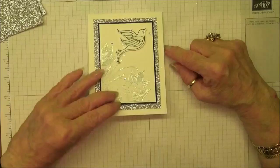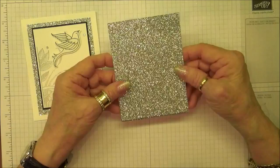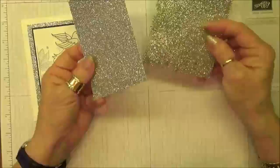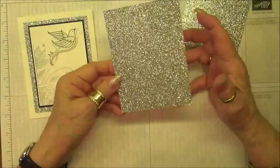One of the things I wanted to point out is the new glimmer paper that Stampin' Up has in our 2018-2019 annual catalog. The new glimmer paper is fabulous. I've always loved glimmer paper, but the drawback to the old glimmer paper is the fact that you get glitter everywhere. It's kind of hard on your cutter and blade.